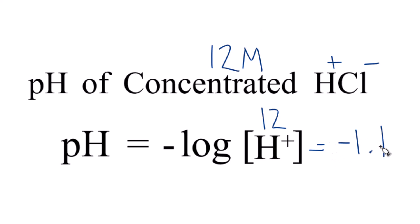So that's really it. You get your bottle of concentrated hydrochloric acid. You see that it's 12 molar. You take the negative log of the H plus concentration, 12 molar, and you get negative 1.1. This is Dr. P, and thanks for watching.